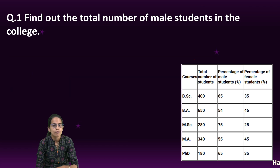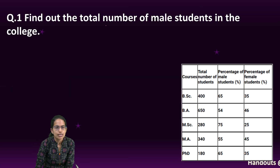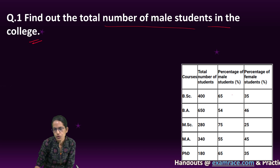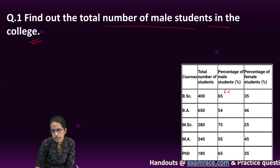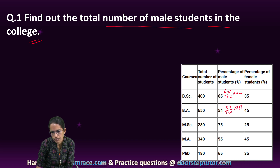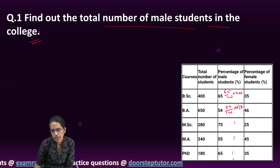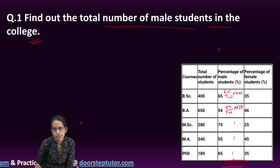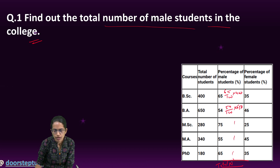So how do you calculate it? The question is: find the total number of male students in the college. You would do 65 divided by 100 into 400, 54 divided by 100 into 650, and so on for all of these. This would give you the total number of male students.